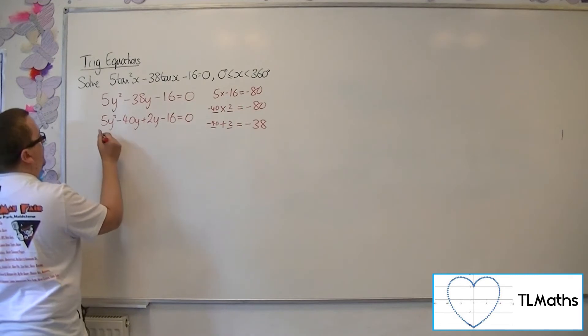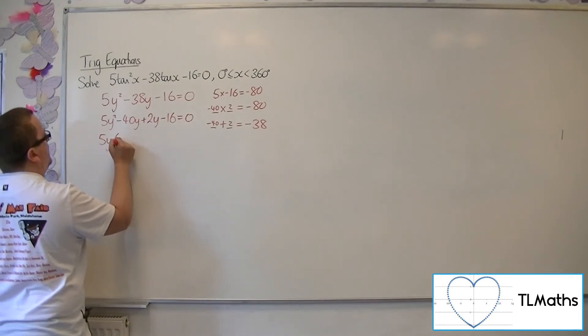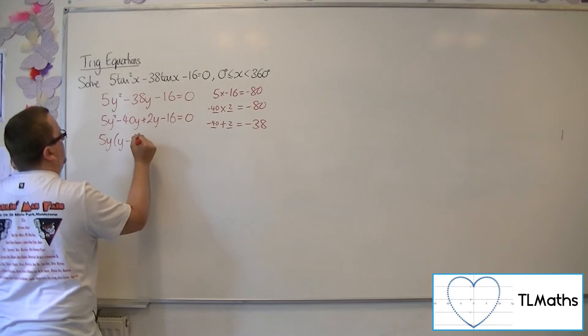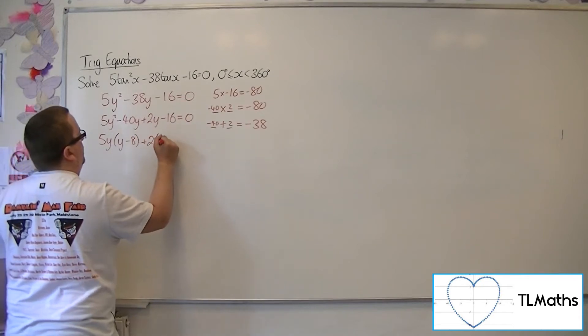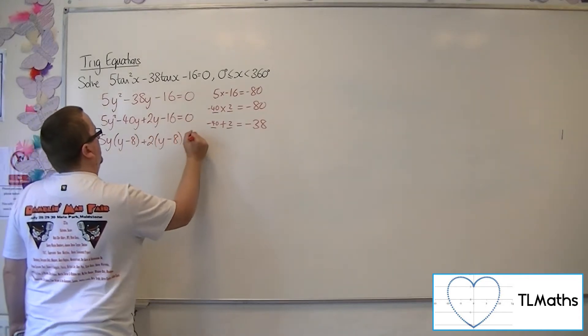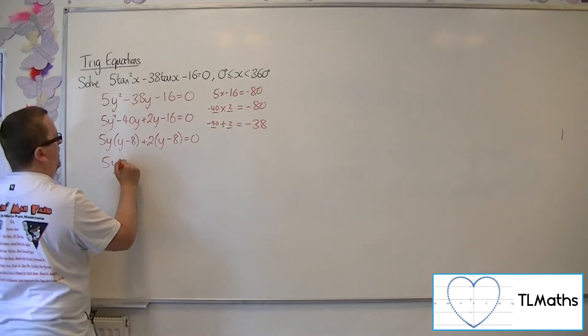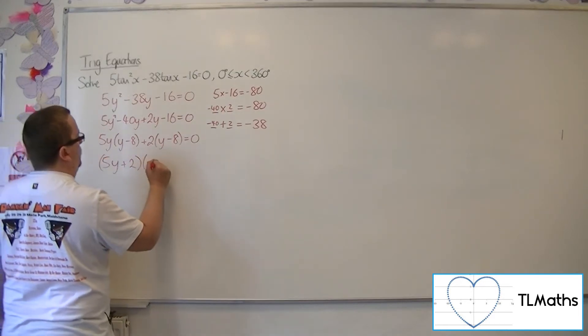Then factorise the two halves. So we can have 5y times y minus 8 plus 2 lots of y minus 8. And so we would have 5y plus 2 times y minus 8.